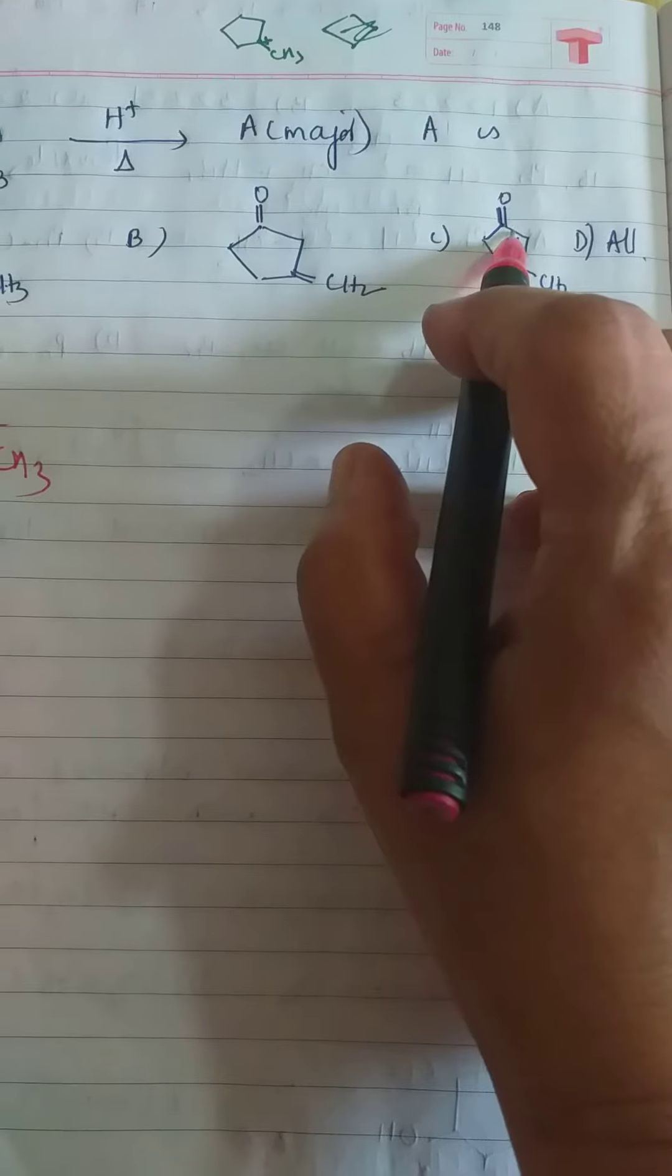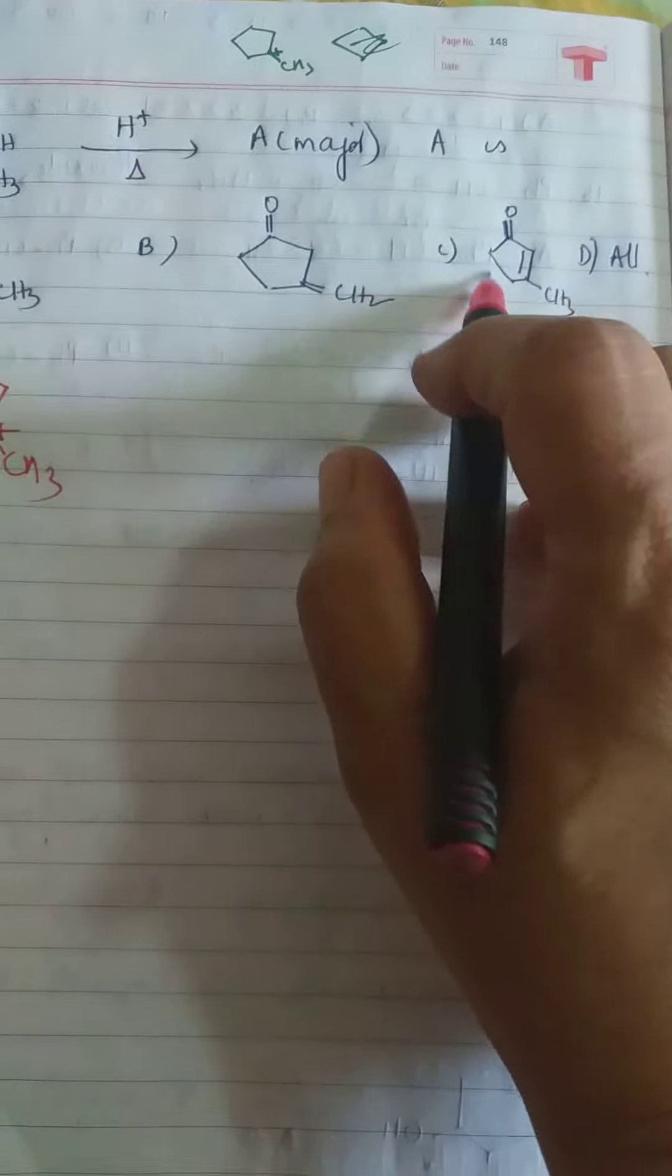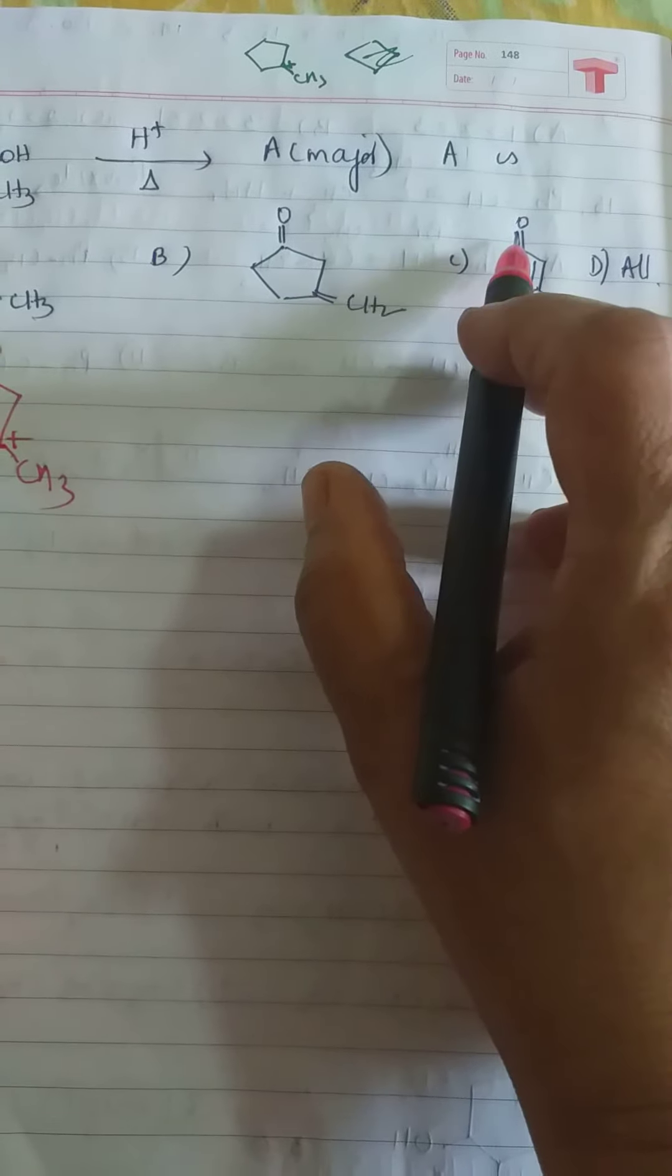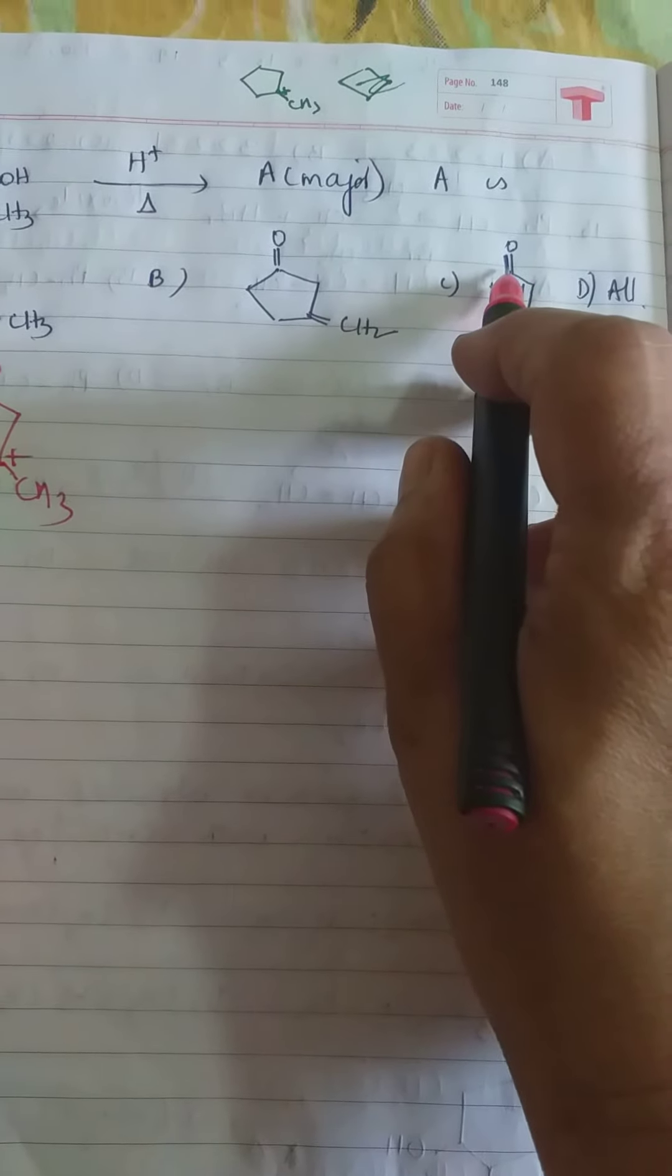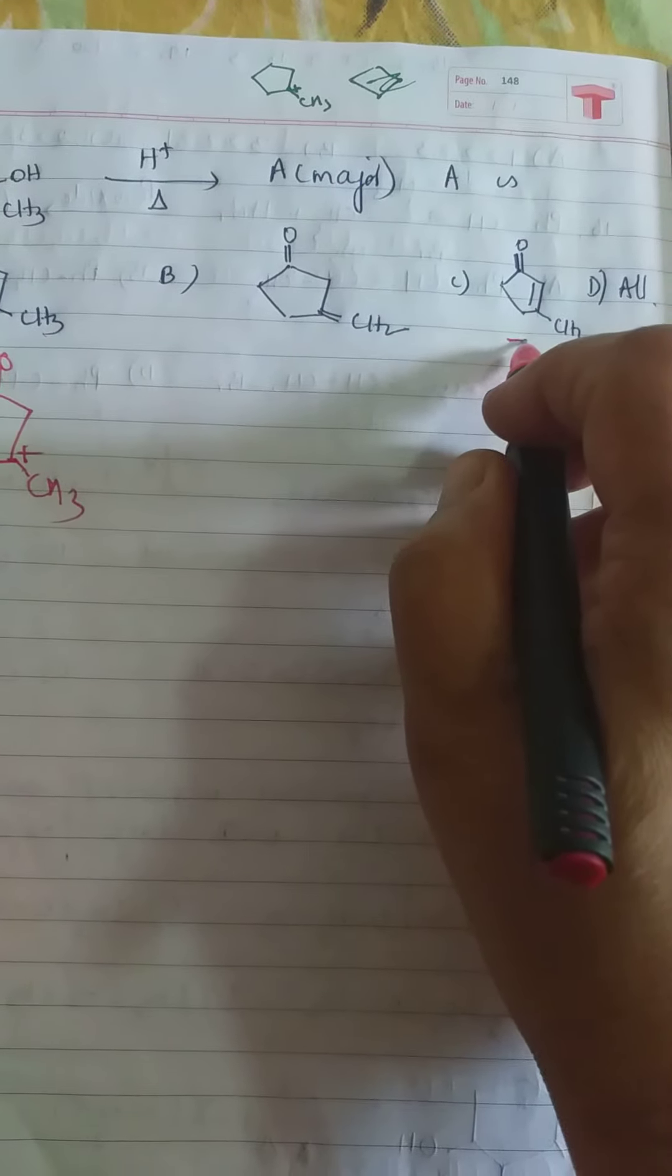The double bond will go in straight conjugation. This is straight conjugation that is taking place - double bond, single bond, then again double bond. This kind of structure is highly preferred, and therefore this is the product that will be formed.